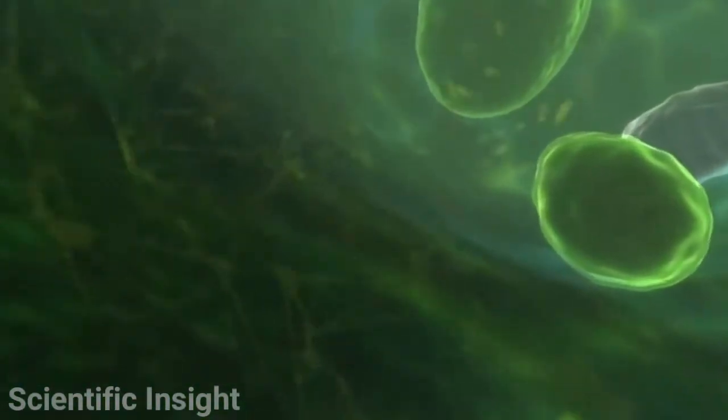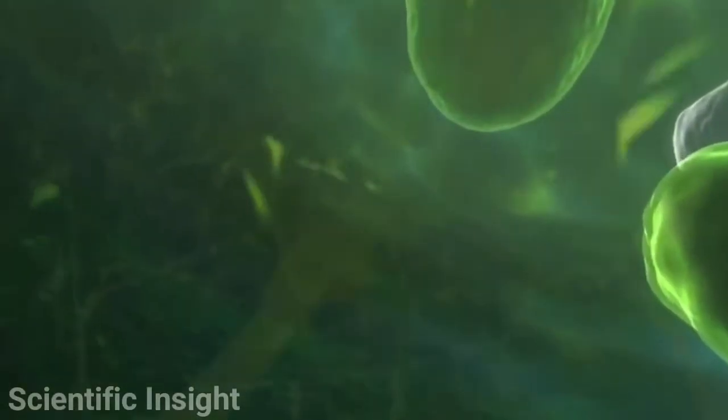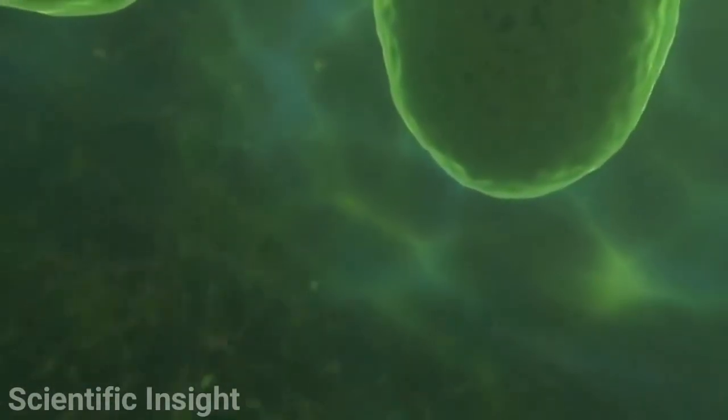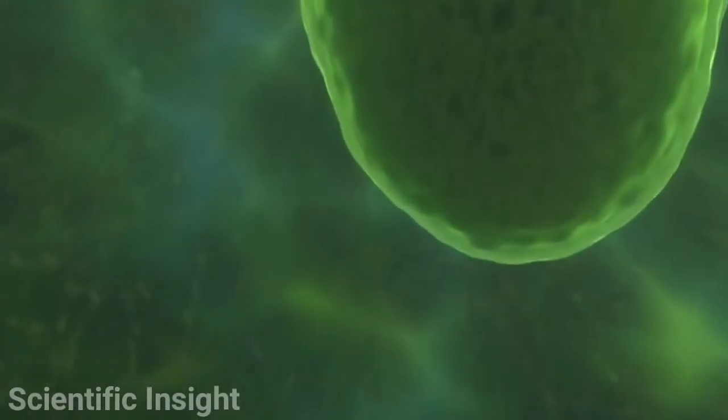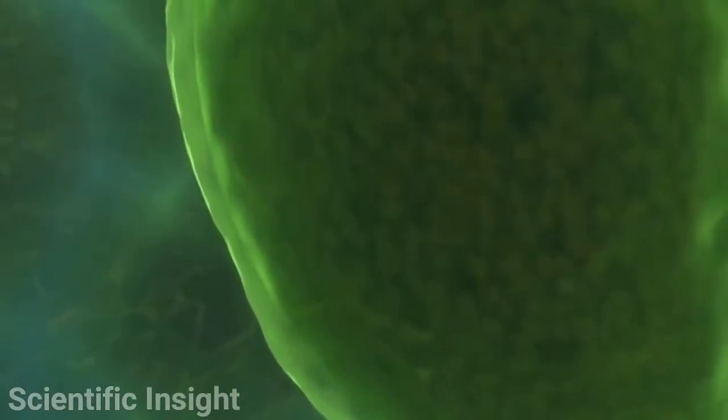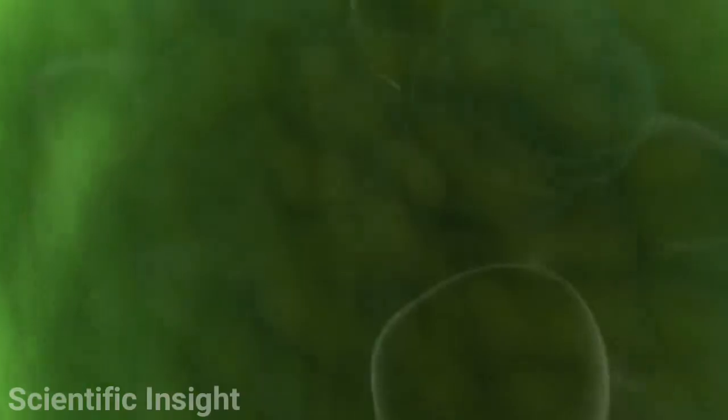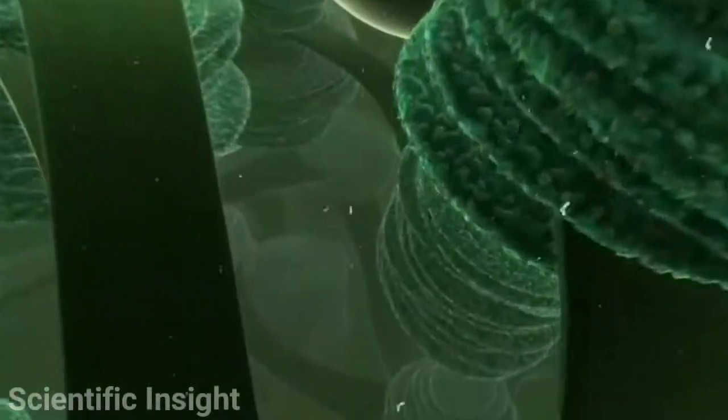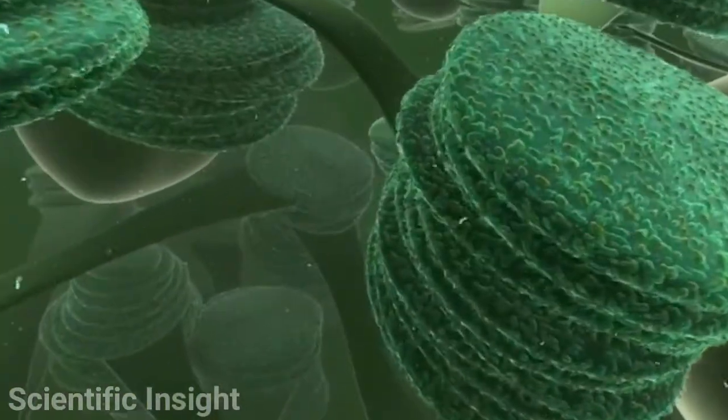You are about to enter a chloroplast. Inside you see flat, pancake-like membranous structures called thylakoids. This is where the light-dependent reactions of photosynthesis take place to produce ATP, the cell's energy carrier molecule.